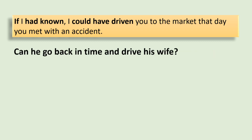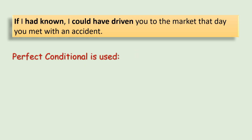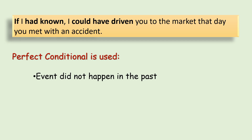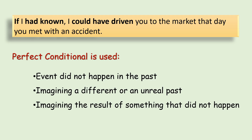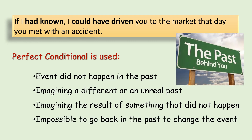Can he go back in time and drive his wife? No, it is not possible. In this example, the perfect conditional is used to refer to an event that did not happen in the past. Mr. Kumar is imagining a different or an unreal past — he is imagining the result of something that did not happen. He could have driven his wife, but he did not. Thus, it is impossible to go back in the past to change the event.